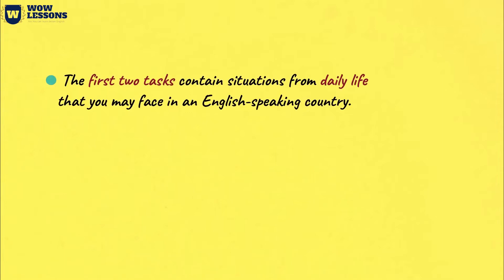In the first section of the IELTS listening, you will hear the dialogue of two people on a general topic. For example, you can hear someone buying tickets or calling to clarify any information. In the second task, there will be an informal monologue — one speaker. For example, the speech of a tour guide or the speech of a person who argues on an everyday topic. Thus, the first two listening sections contain situations from daily life that you may encounter while living in an English-speaking country.